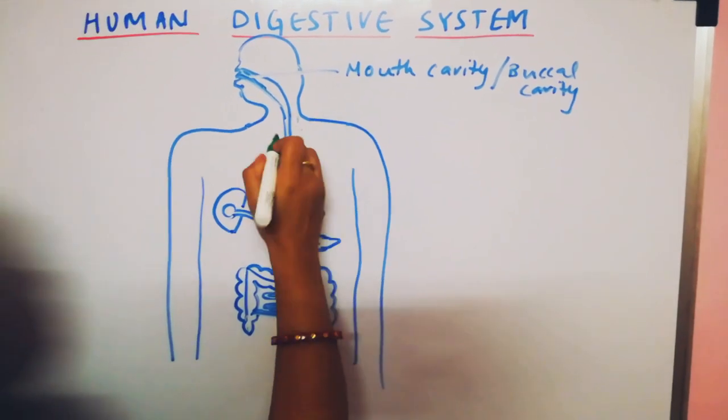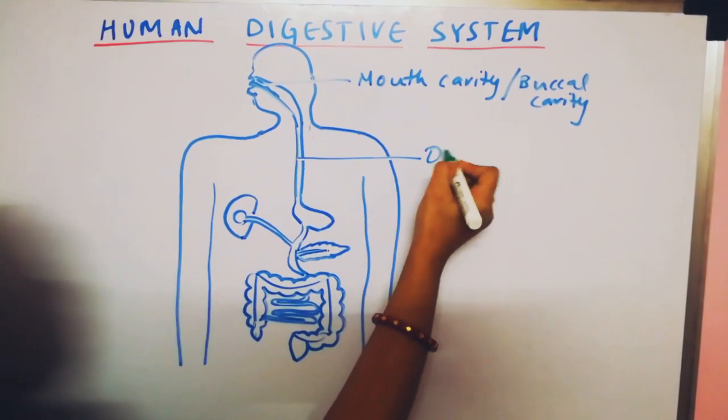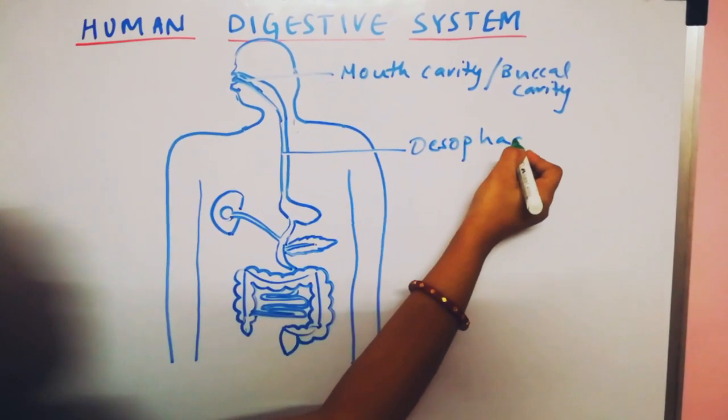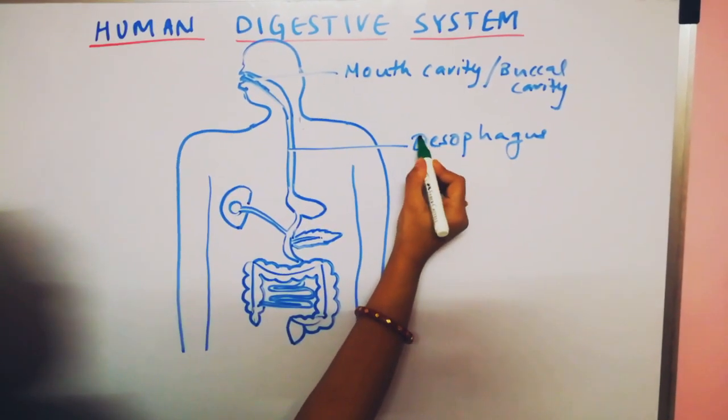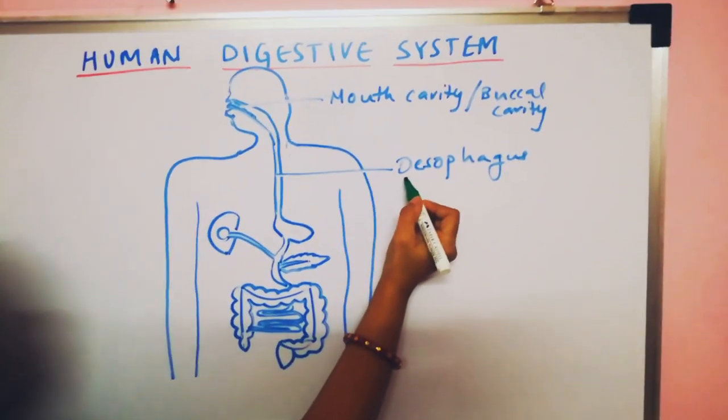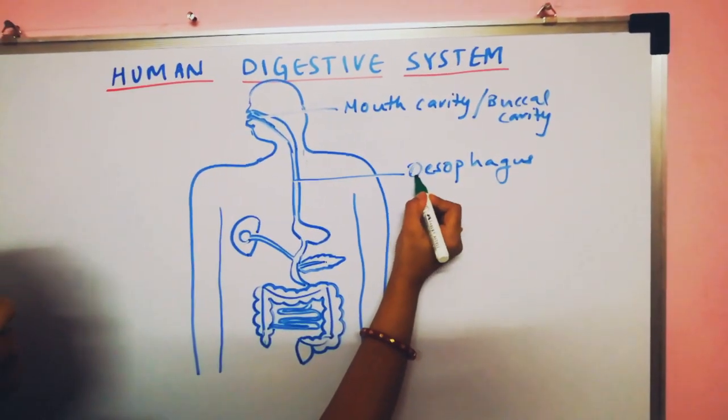Then this tube-like structure is known as esophagus. Here, O is silent, but it starts from E. But O is silent, and in the spellings, we used to start it with O.